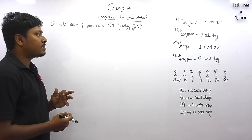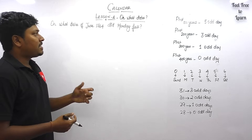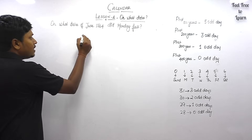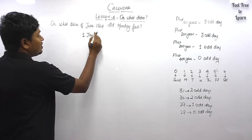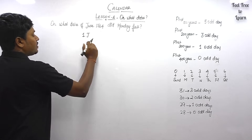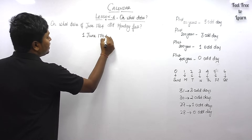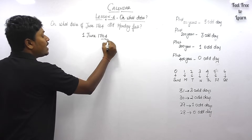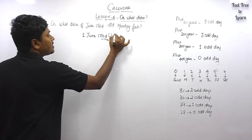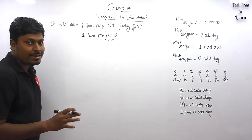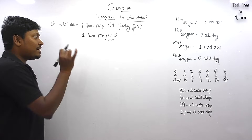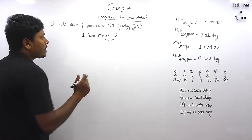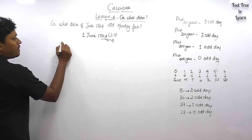Question four: on what dates of June 1764 did Monday fall? Our target is to find all the days where Monday falls in June 1764. First, find the day of the week for 1st June 1764. Check if 1764 is a leap year — last two digits are 64, which is divisible by four, so 1764 is a leap year. For a leap year, February has 29 days, giving one odd day.